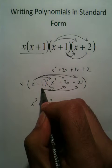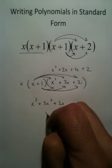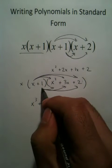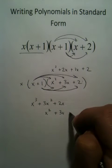Right here, 1 times x is x squared. Now, I use column format because it's easier for me to add my terms. 1 times 3x is 3x, and 1 times 2 is 2.